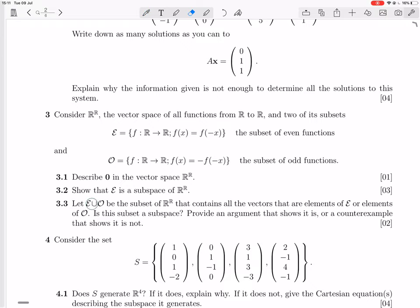Now, let E union O, so the even and odd functions, be the subset of R^R that contains all the vectors that are elements of E or elements of O. Is this subset a subspace? Provide an argument that shows it is, or a counterexample that shows it's not.